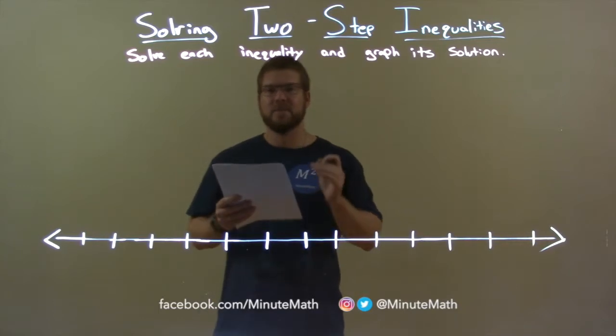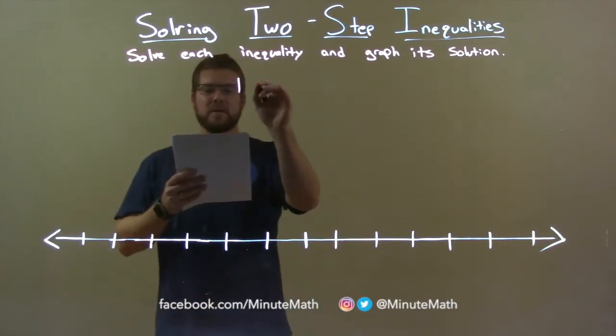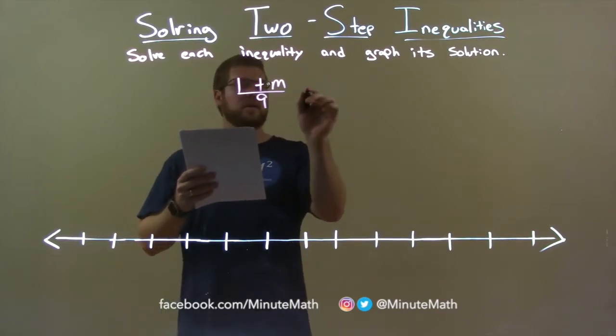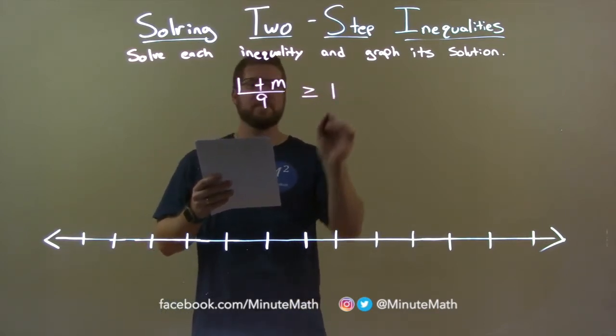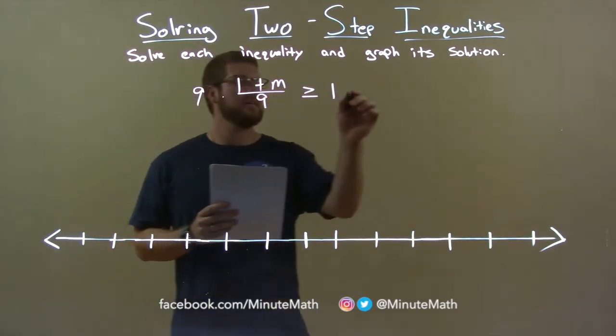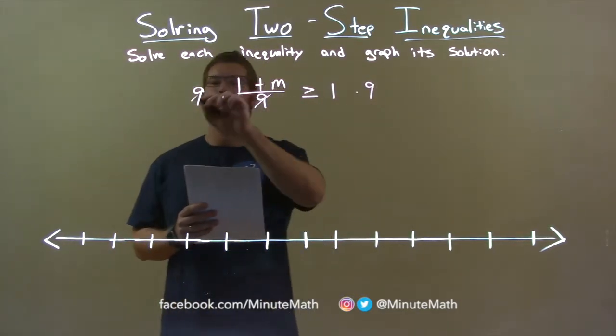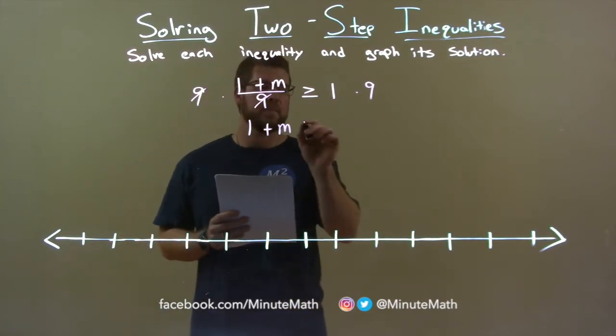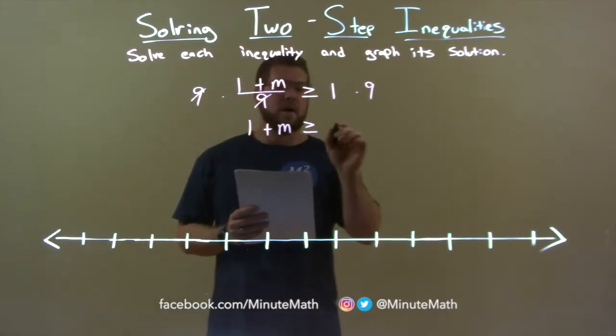If I was given this inequality, 1 plus m over 9 is greater than or equal to 1. The first thing I want to do is multiply 9 to both sides. 9 is going to eliminate it, and that's with 1 plus m on the left. On the right, 1 times 9 is 9.